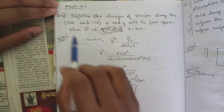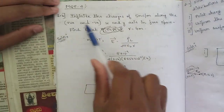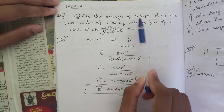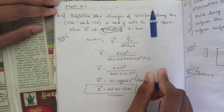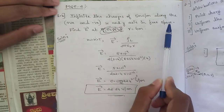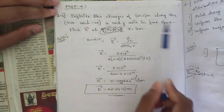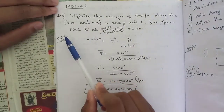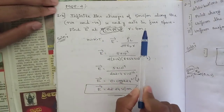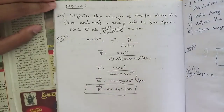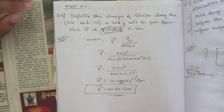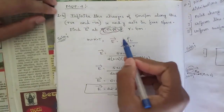This is question 1b of the model paper. Two infinite line charges of 5 nanocoulombs per meter along the positive and negative x and y axis in free space are given. We need to find the value of E at r equal to 4 meters. This is a straightforward question worth four marks.